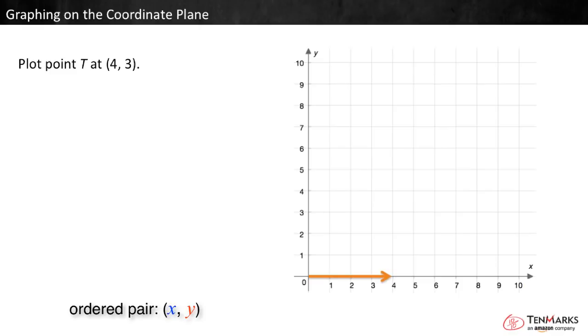The y coordinate is three, so count up three. Place the point here, where the grid lines cross. Label it T.